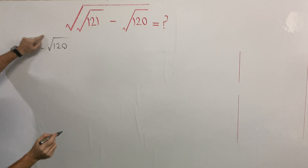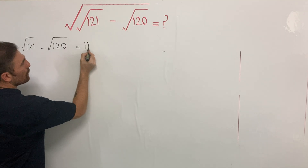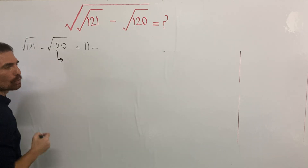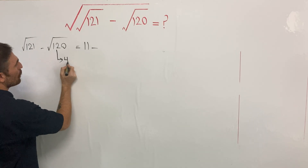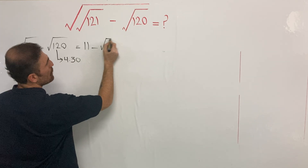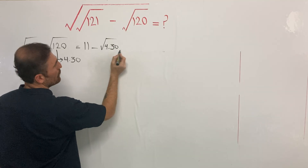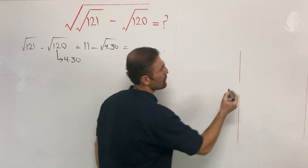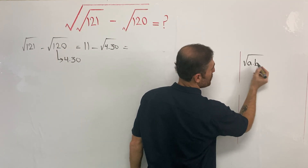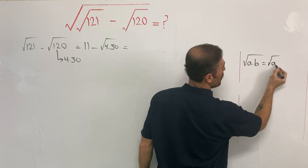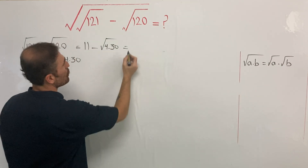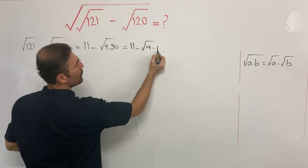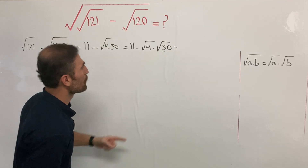121 is a perfect square, so second root of 121 is 11, minus — what can we do with 120? I'm going to rewrite it as a product of two numbers: 4 and 30. So let me rewrite it as second root of 4 times 30. Using the rule that second root of a times b equals second root of a times second root of b, it is going to be 11 minus second root of 4 times second root of 30.